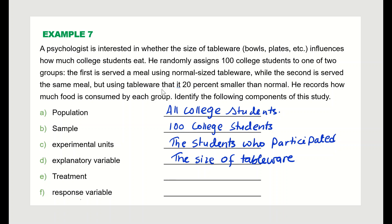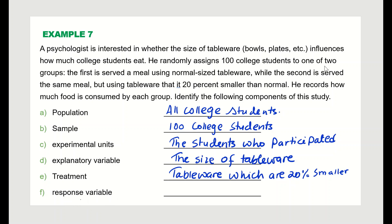The treatment is the tableware that is 20 percent smaller than normal — that is the treatment group. The response variable — what the researcher is studying — is the amount of food eaten.